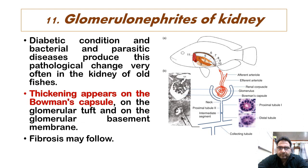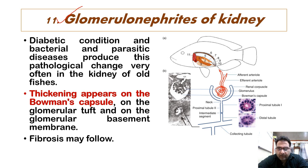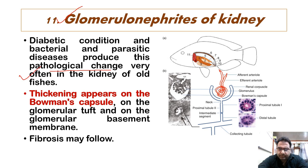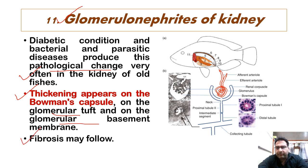Then we have glomerulonephritis, which as the name indicates is inflammation of the glomerulus. Diabetic conditions and bacterial and parasitic diseases produce this pathological change. It is very common in the kidneys of older fishes. Thickening of the Bowman's capsule occurs on the glomerular tuft and the glomerular basement membrane, and later on fibrosis may follow, resulting in glomerulonephritis of the kidney.